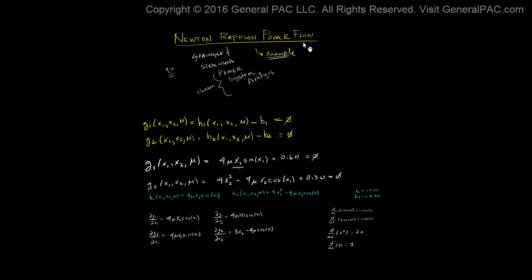This is a tutorial on the Newton-Raphson Power Flow example. This is part 2 of the tutorial. We took an example from Granger and Stevens' book — example number 9.3 in section 9.4. This example is so general that hopefully you'll get a much better understanding of the Newton-Raphson method.